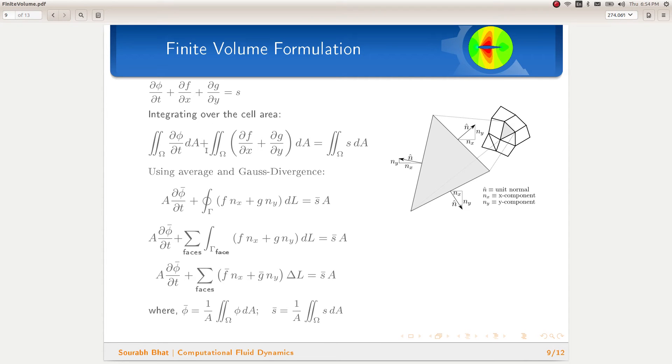The most interesting term here is the area integral of the space derivative terms. These terms get simplified by using the Gauss divergence theorem, which converts the area integrals to line integrals over the closed boundary of the cell.